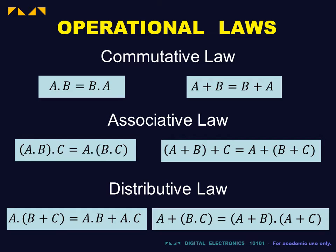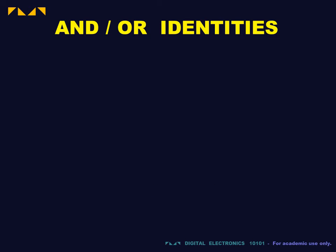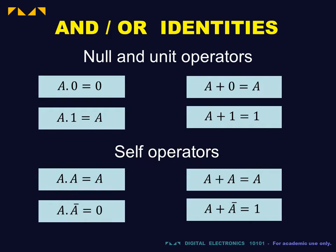An interesting exception is that distribution applies both to the AND operation and to the OR operation. Reduction of null, unit, and self operators is an essential part of Boolean simplification.